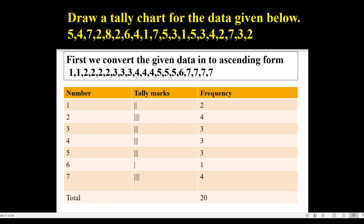Then we have to give tally marks. Number 1 appears 2 times, so I have given 2 vertical lines for number 1. Number 2 appears 4 times, so I have given 4 vertical lines for number 2. Similarly, number 3 appears 3 times, so I have given 3 vertical lines. For number 4, I have given 3 vertical lines because number 4 appears 3 times. Similarly, number 5 appears 3 times, number 6 appears 1 time, and number 7 appears 4 times. Therefore, I have given 4 vertical lines for number 7.